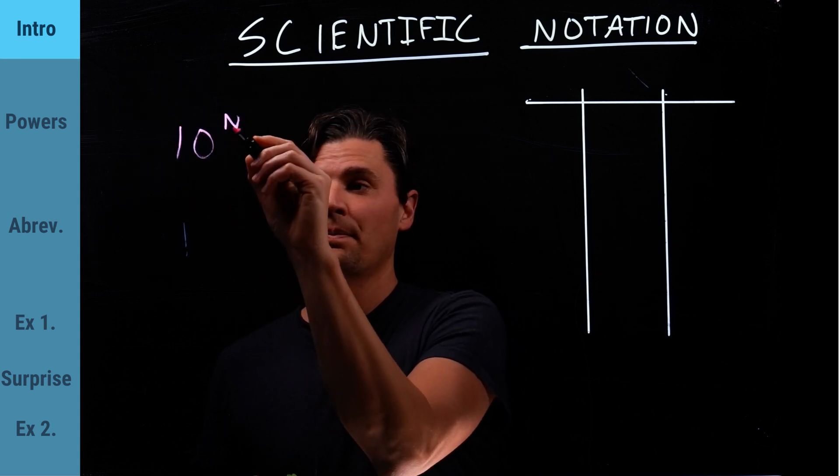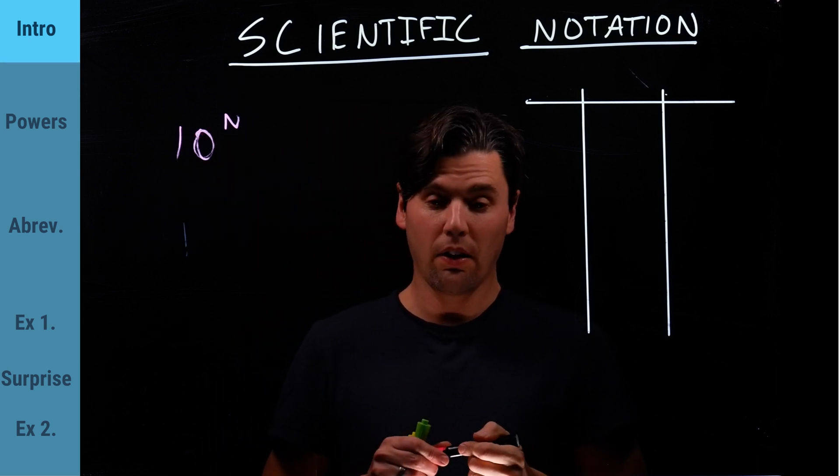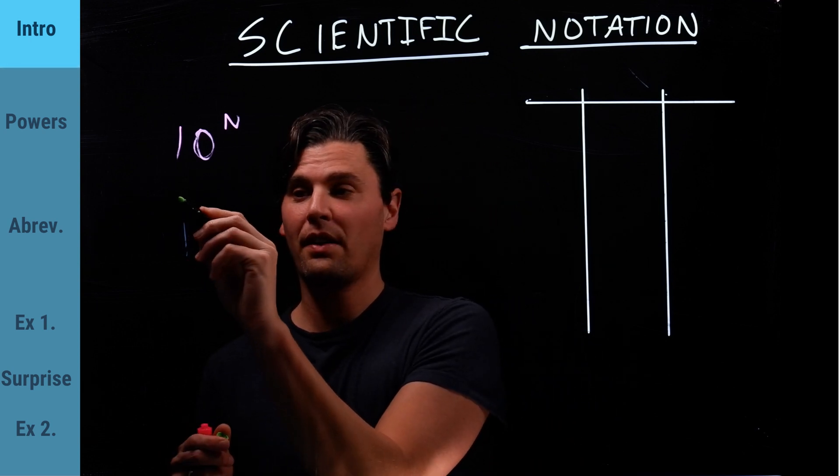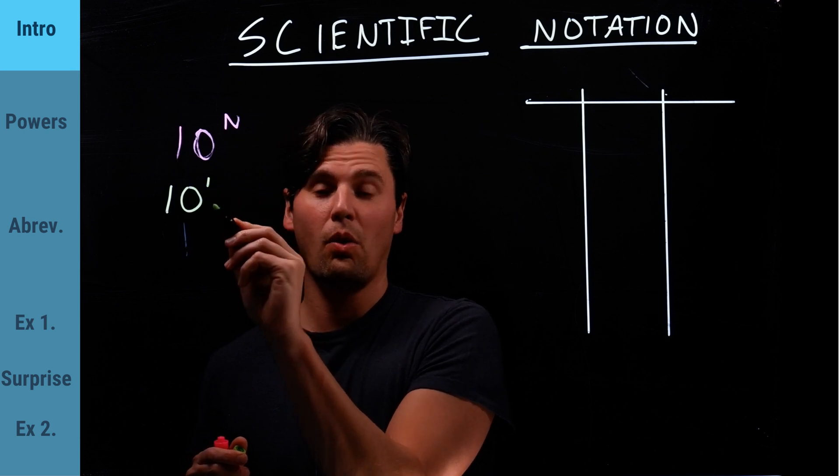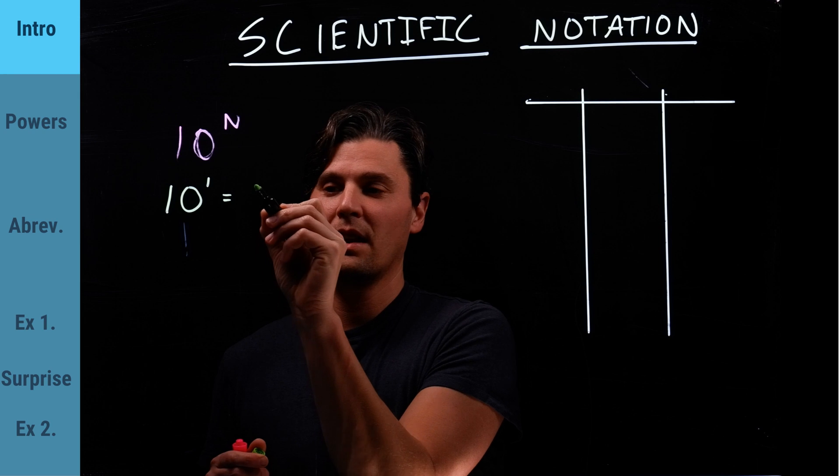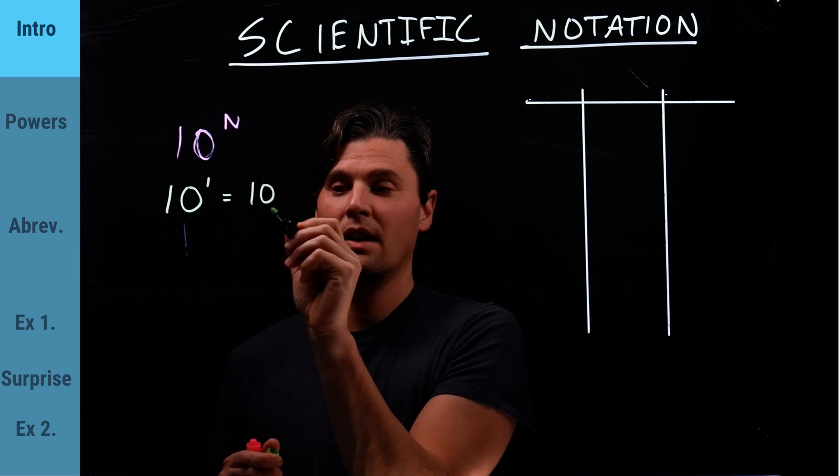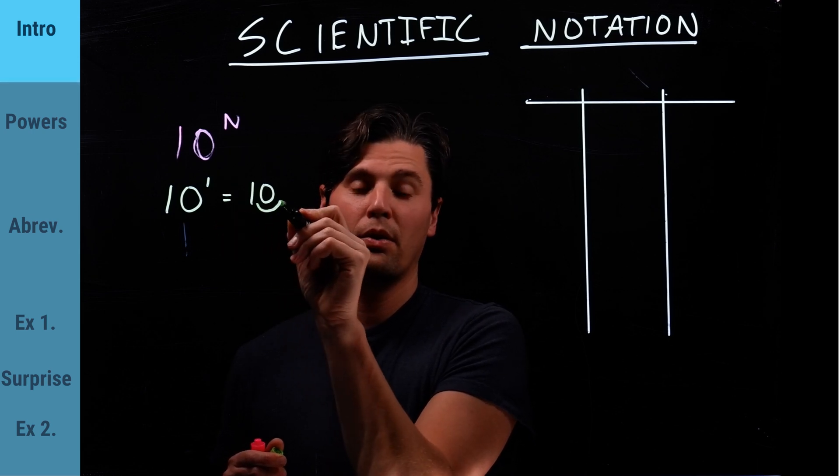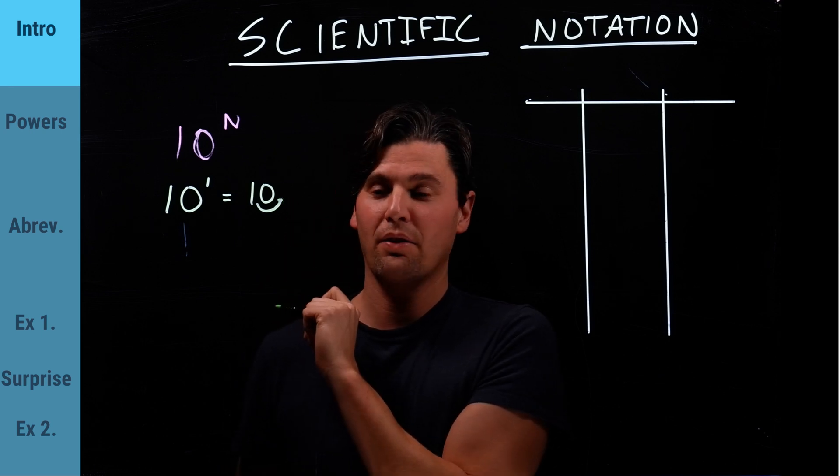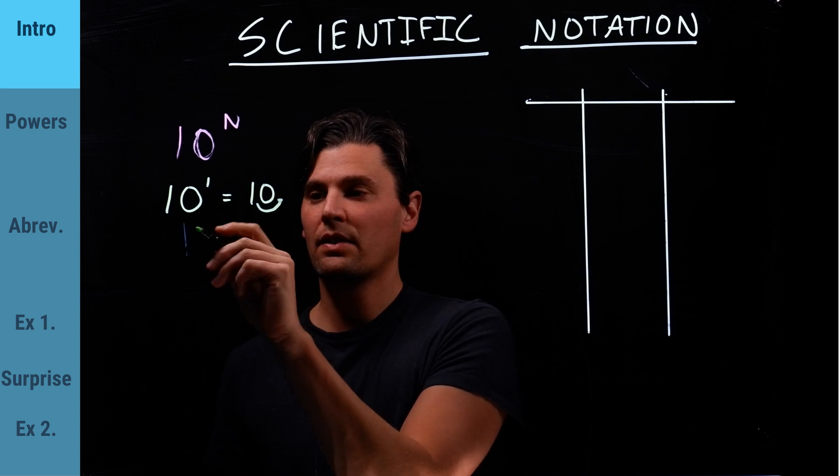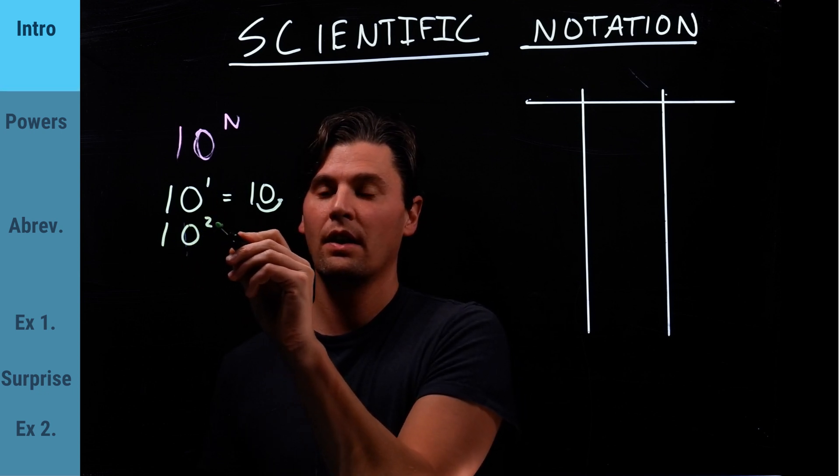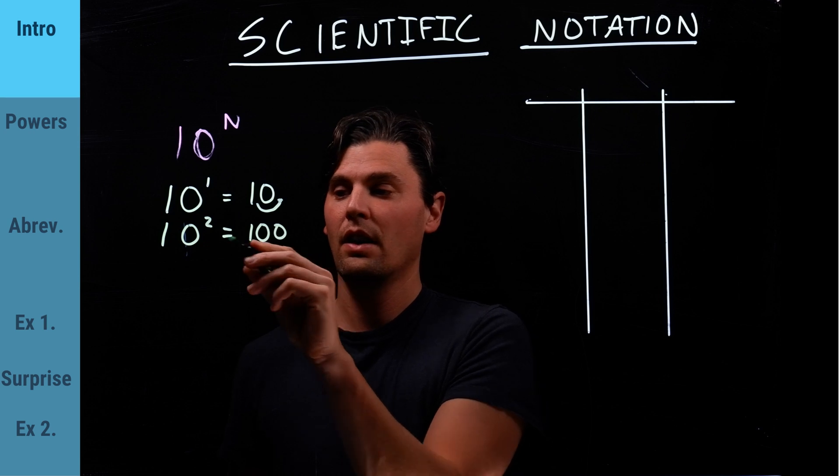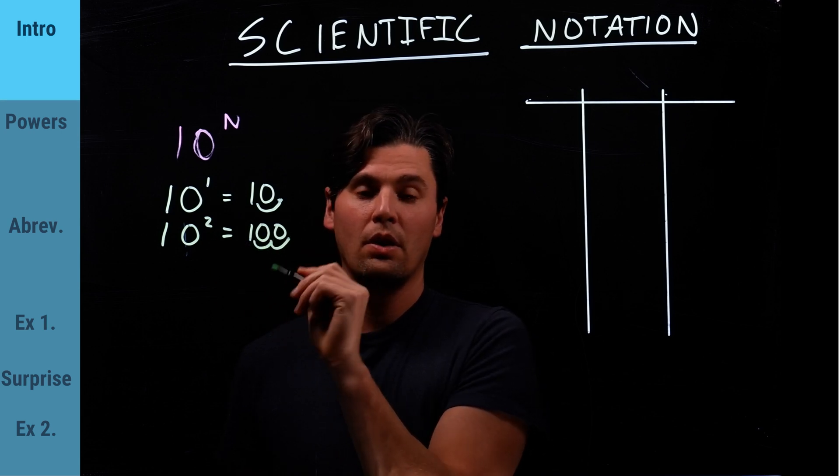For 10 to the n, we're talking about, for instance, if you just have 10, 10 to the 1, anything raised to the 1 is that same number, right? So that's just 10. And this number here, if you think about it, if I start right here and I move one spot, I'll be behind the final digit I have. That's 10. If you have 100, if we do the same thing, 10 squared is 100. 1, 2, so the same thing.